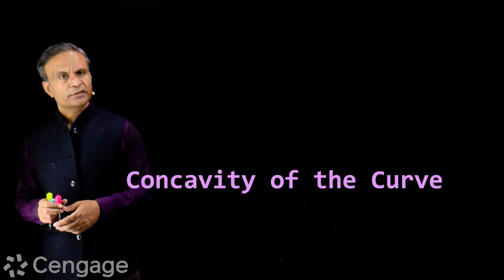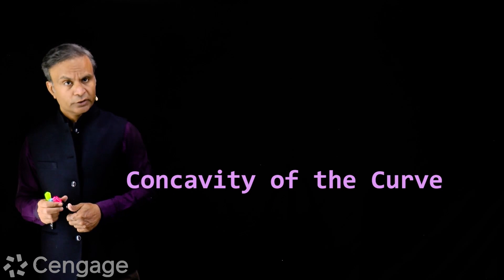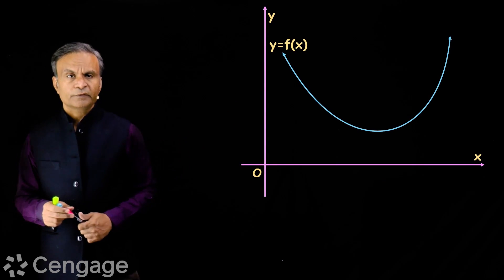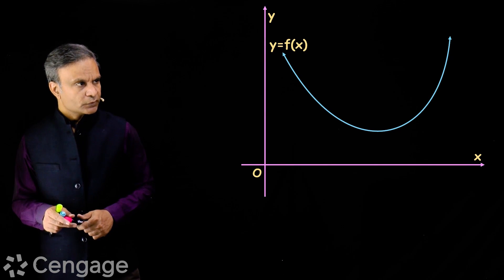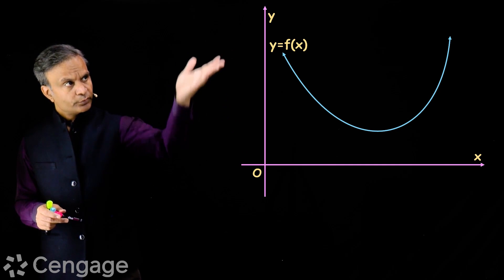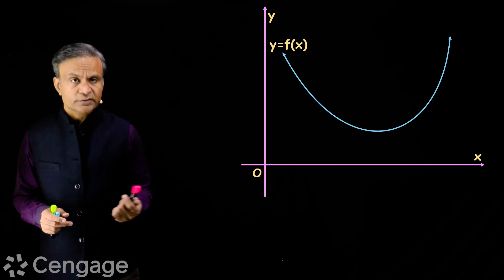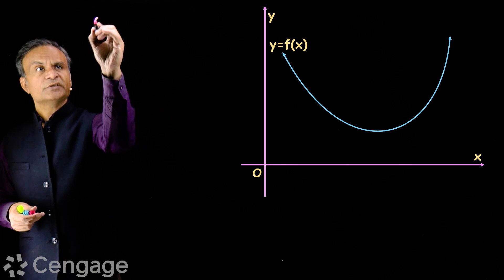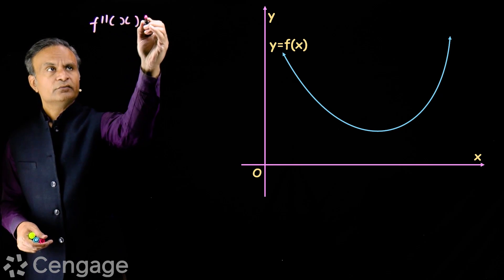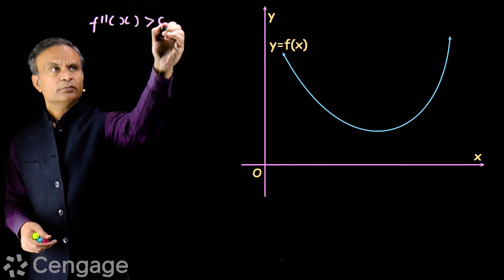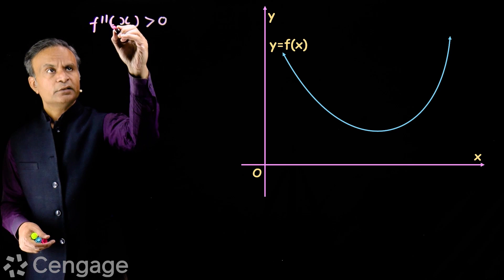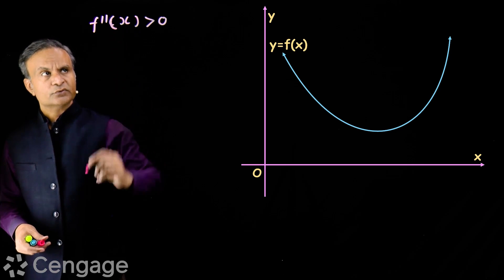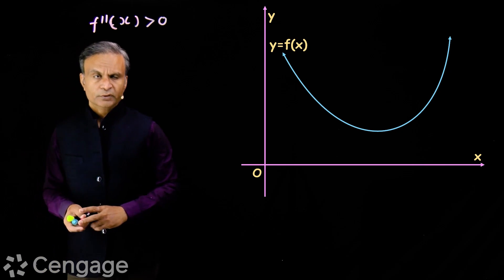Now we have some very interesting inequalities involving concavity. We have a graph of function y equal to f(x). This graph is concave upward — open towards positive infinity. For this function the second derivative will be positive, since it opens upward.